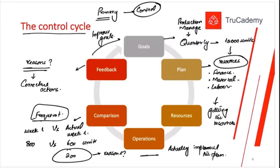If the quarterly goal is consistently missed — for example, five straight weeks of underproduction — it means the goal of 10,000 units was unrealistic. In that case, modify the quarterly goal, say from 10,000 to 7,000 units, then improve the plan accordingly. This cycle keeps going for the whole quarter — this is what we call the control cycle.